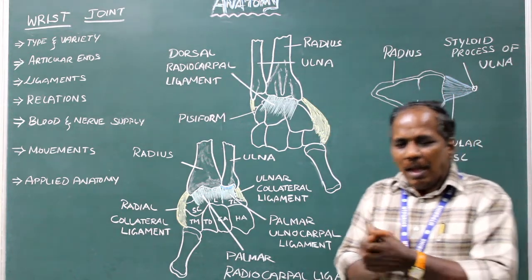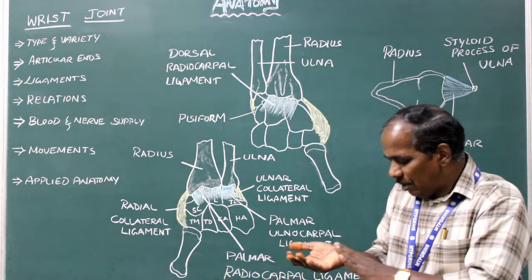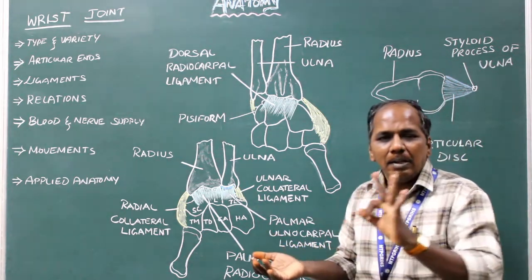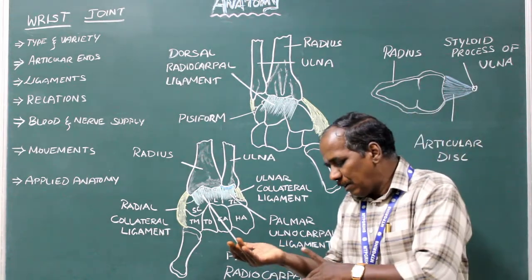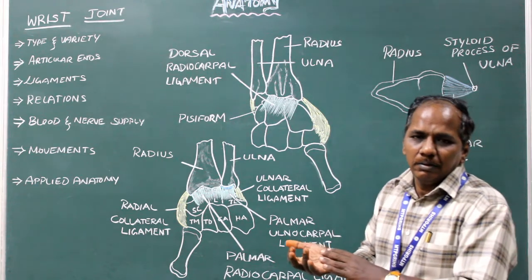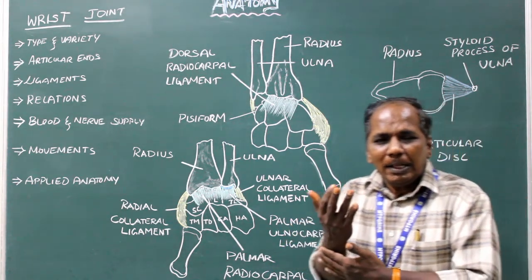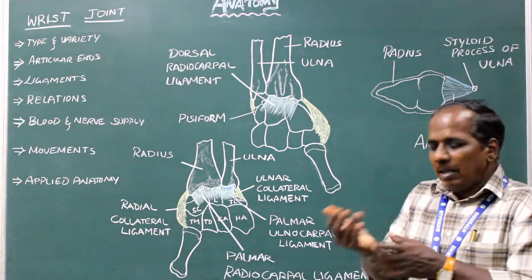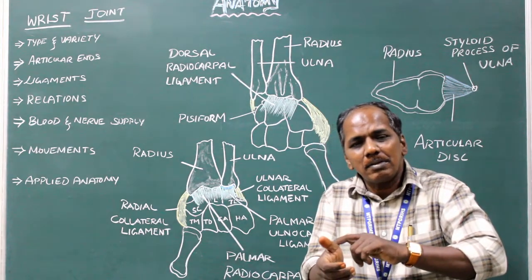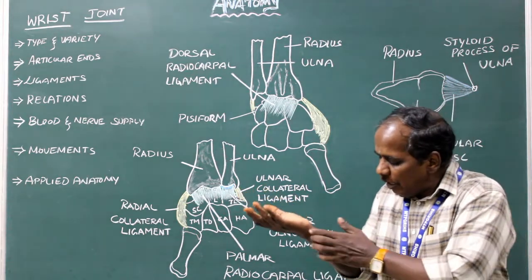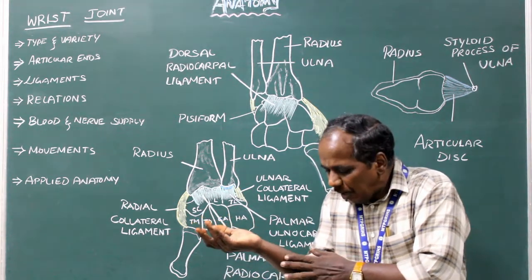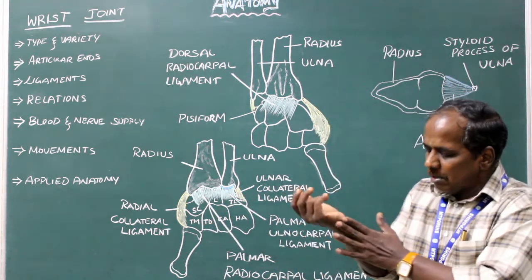Relations. Anteriorly: tendon of flexor digitorum superficialis, flexor digitorum profundus, flexor pollicis longus, flexor carpi ulnaris, and the median nerve. Posteriorly: the extensor tendons of wrist and digits. Laterally: tendon of abductor pollicis longus, extensor pollicis brevis, and the radial artery. Medially: the dorsal cutaneous branch of the ulnar nerve, which arises from the middle of the forearm and descends on the medial aspect of the wrist joint.